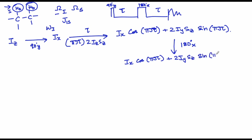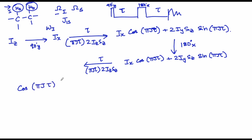Now when you apply the τ delay again for the scalar coupling evolution, let me write this carefully. This is going to be cos(πJτ) times [Ix cos(πJτ) + 2Iy Sz sin(πJτ)].